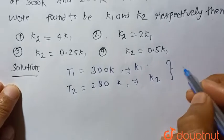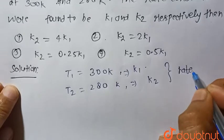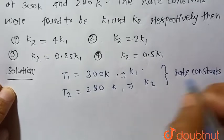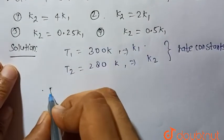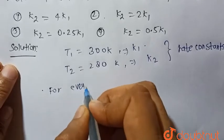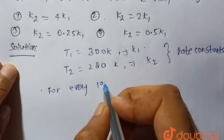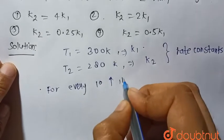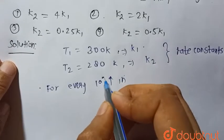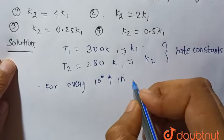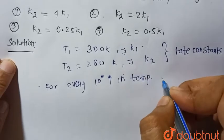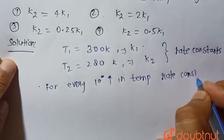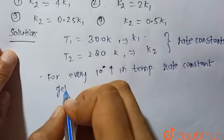k1 and k2 are the rate constants at T1 and T2 respectively. So we know that for every 10 degree increase in temperature, rate constant gets doubled.